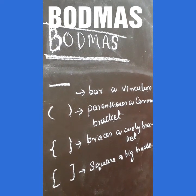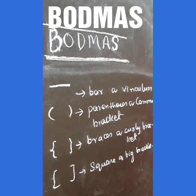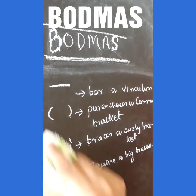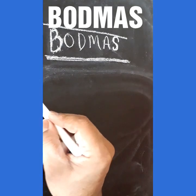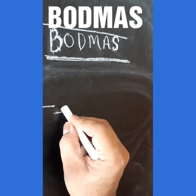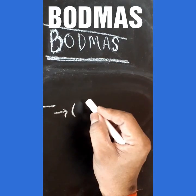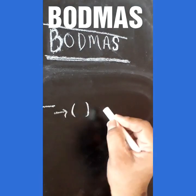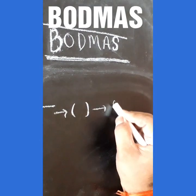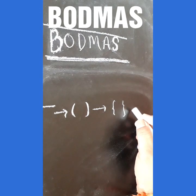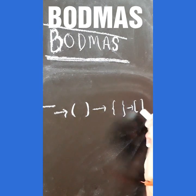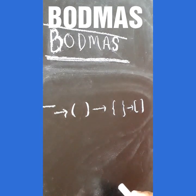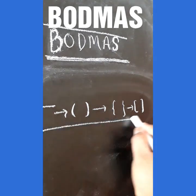Now we will see the order of their solving. While solving, we follow this order: first we solve the bar, then we solve the common bracket, then we solve the curly bracket, and finally we solve the square or big bracket. We always follow this order.